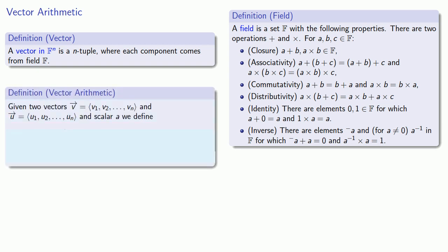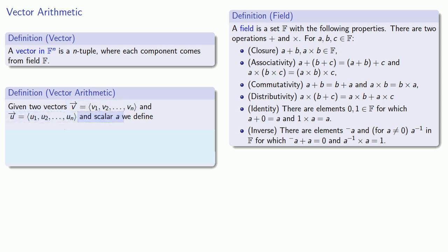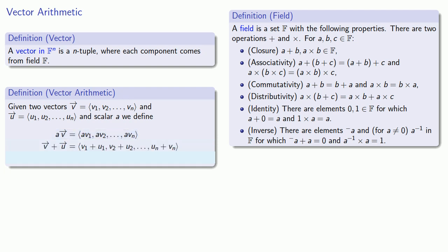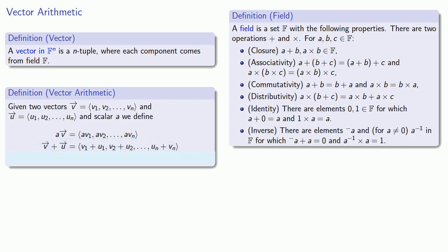Given two vectors v with components v1 through vn and u with components u1 through un, and a scalar a, we define a times v — the scalar multiple of v — to be the vector where every component of v is multiplied by a. We define v plus u, the sum of the two vectors, to be the vector whose components are the sums of the corresponding components of v and u. Finally, we define v minus u, the difference between the two vectors, to be the vector v plus negative 1 times the vector u.